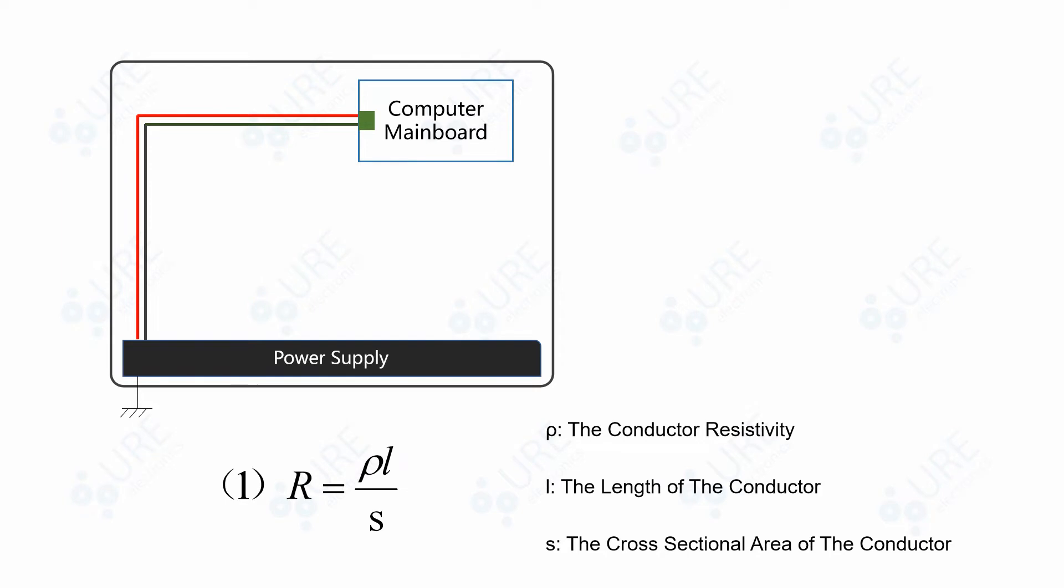When the current flows through the cable, there will be a voltage drop which will fluctuate with the signal, forming a DC signal attached with an irregular and messy AC signal. It is assumed that the length of cable used to power the CPU is 35 cm and the wire gauge is AWG18, so the cross-sectional area is 0.82 mm².